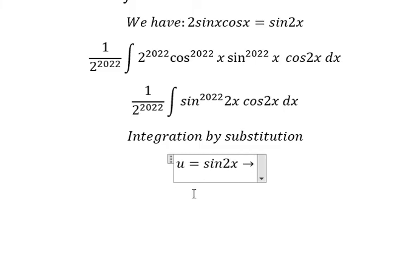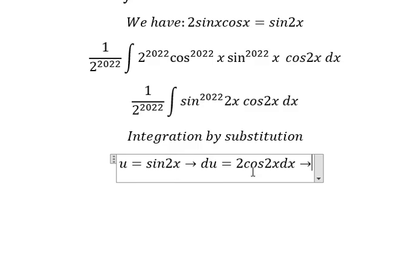Later we need to do the first derivative for both sides. Next we divide both sides by number 2, so du over 2 equals cosine 2x dx.